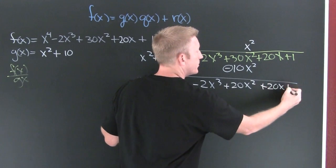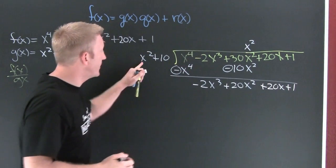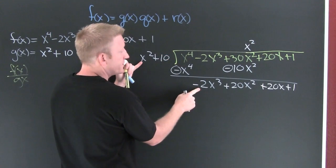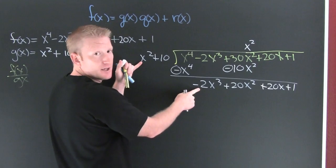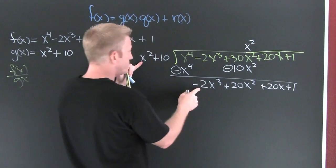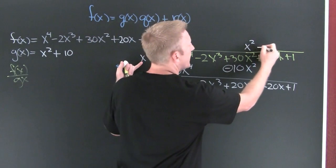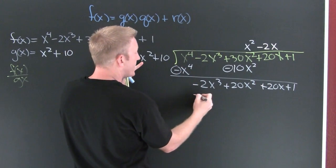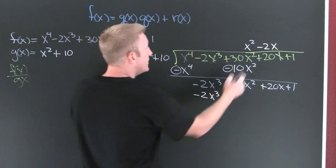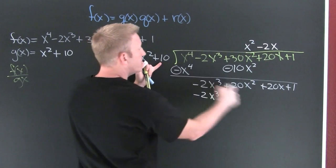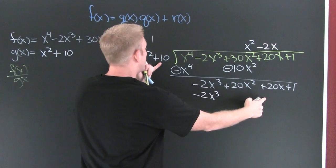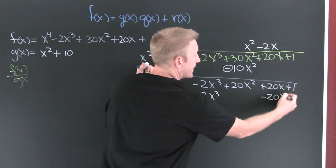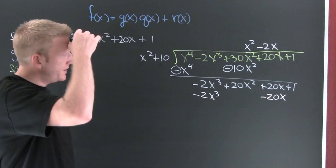What am I going to multiply x squared by to get minus 2x to the third? It appears it's going to be minus 2x. This one times that one put it there: minus 2x to the third. This one times that one put it where? Right there. So that's minus 20x.